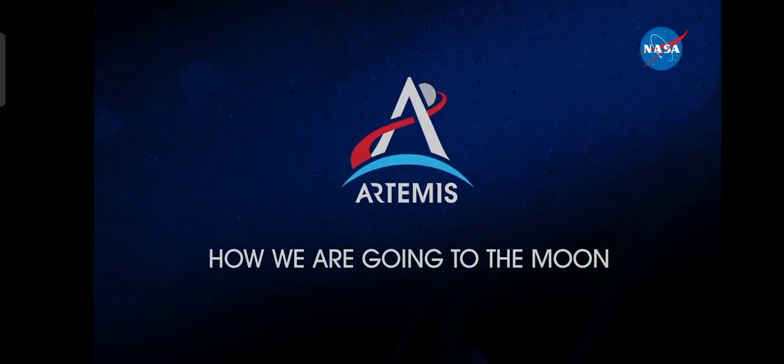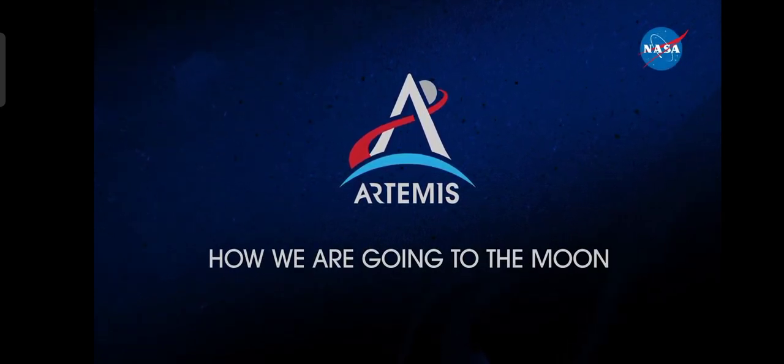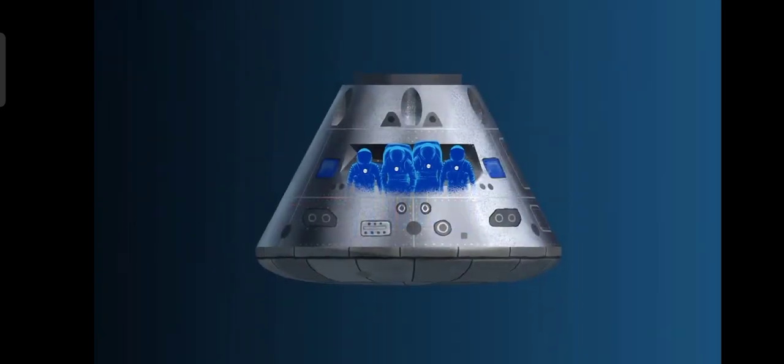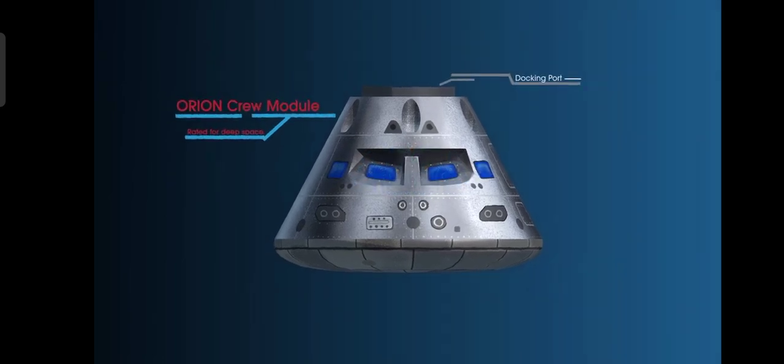Everything is designed and tested with our most important element in mind, the astronauts. This is their deep-space, human-rated spacecraft called Orion, built in three parts.